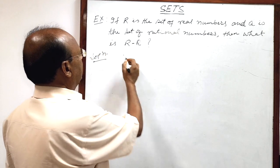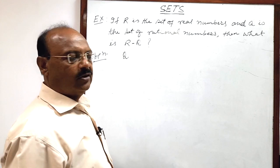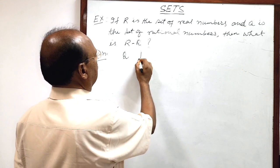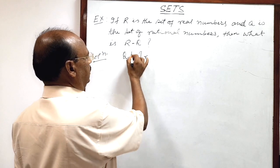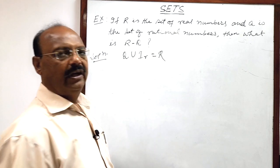If set of rational number is denoted by Q and set of irrational number is denoted by suppose IR, then union of these two sets is set of real numbers.